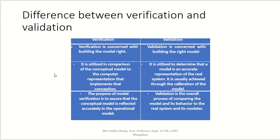For example, when engineers construct a house, they build one model through software first — that is the conceptual model — and then implement it in real time. Similarly, validation lies to determine that the model is an accurate representation of the real system, usually achieved through calibration of the model. Calibration means after building, we match it with some other model to see whether we have reached the expected outcome. In verification, we check a model against the conceptual framework; in validation, we check it against an already-implemented model.